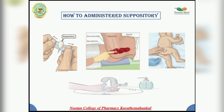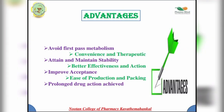To administer suppositories: first, take the suppository and open it properly with your hand, making sure you are bearing hand-clean before opening the packaging. Next, take the suppository on your finger and carefully insert it into the affected area. Finally, wash your hands with flowing water and sanitizer. This chart shows how to administer suppositories.